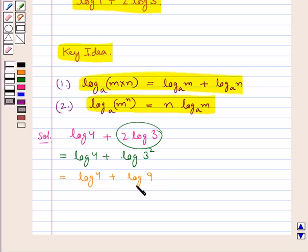we find that log 4 plus log 9 could be written as log of 4 multiplied by 9. That is, this is equal to log 36.